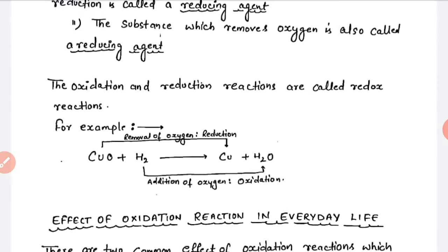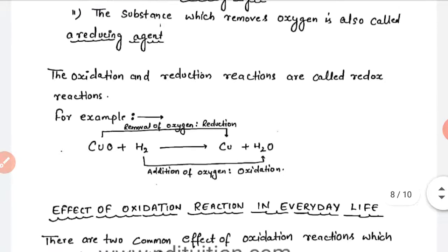Oxidation and reduction reactions together are called redox reactions — when both reactions take place in a single reaction. For example, CuO plus H2 gives Cu plus H2O. Removal of oxygen from CuO to form Cu is reduction, and H2 gaining oxygen to form H2O is oxidation. So this whole reaction is called a redox reaction.